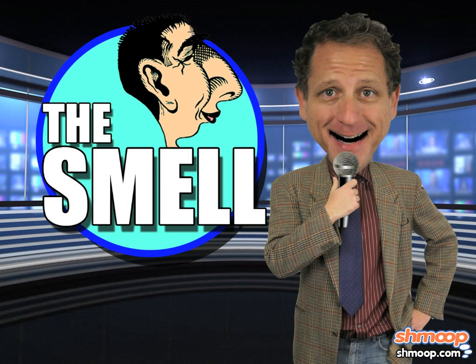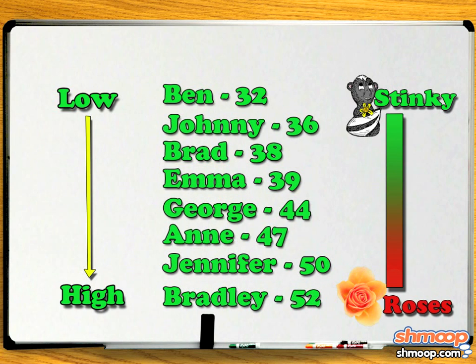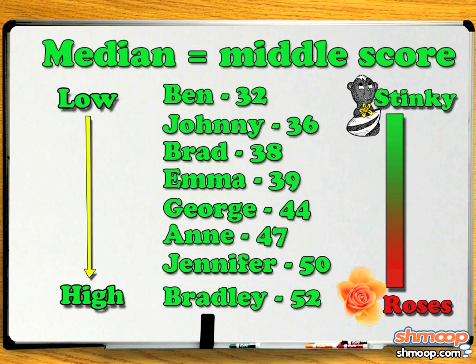Let's create a box and whisker plot for the judges' scores. While we take another sniff and compare our scores with the judges, it might help you to put them in numerical order and find the median, or the middle score.